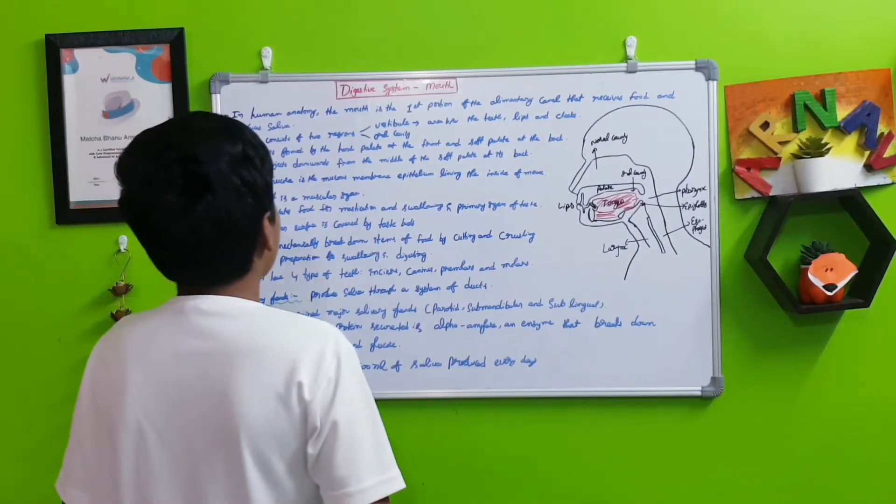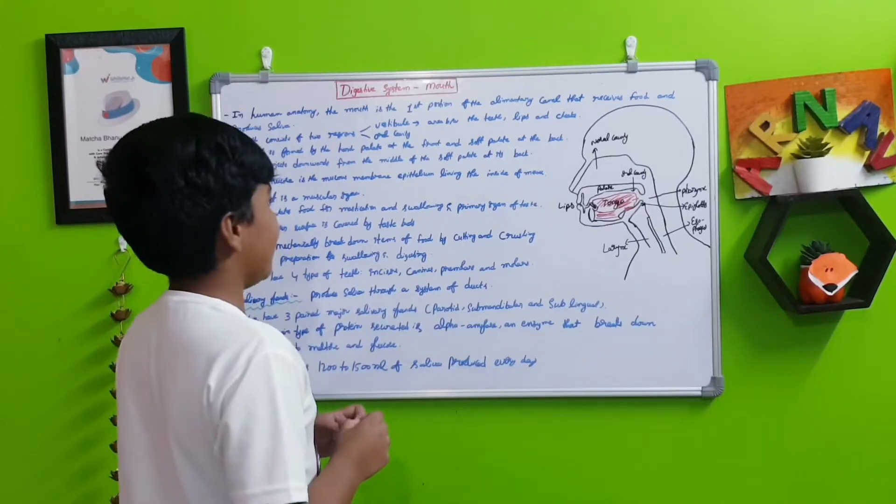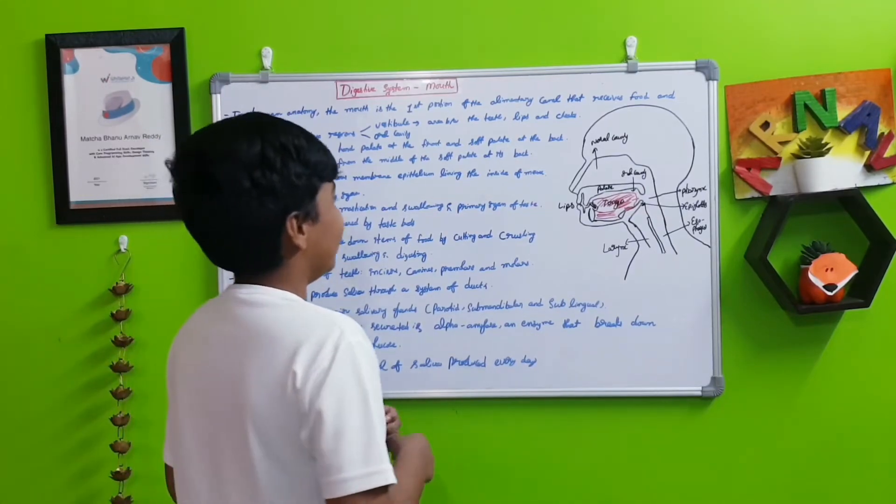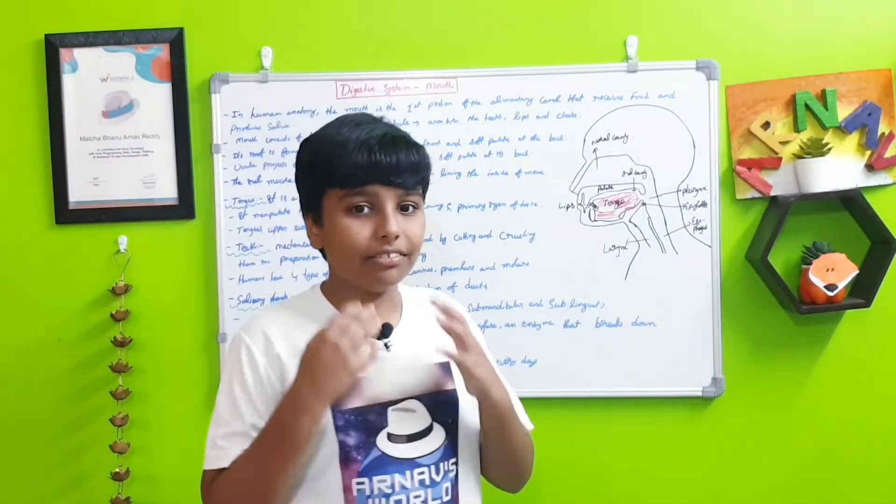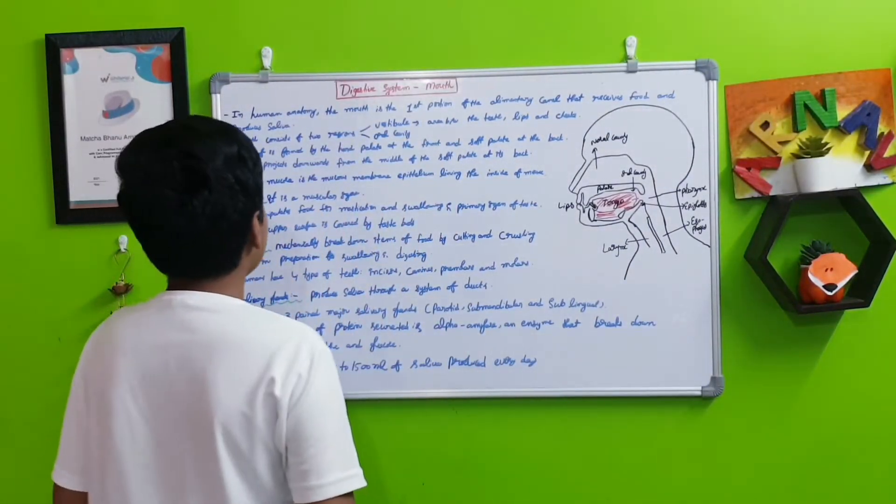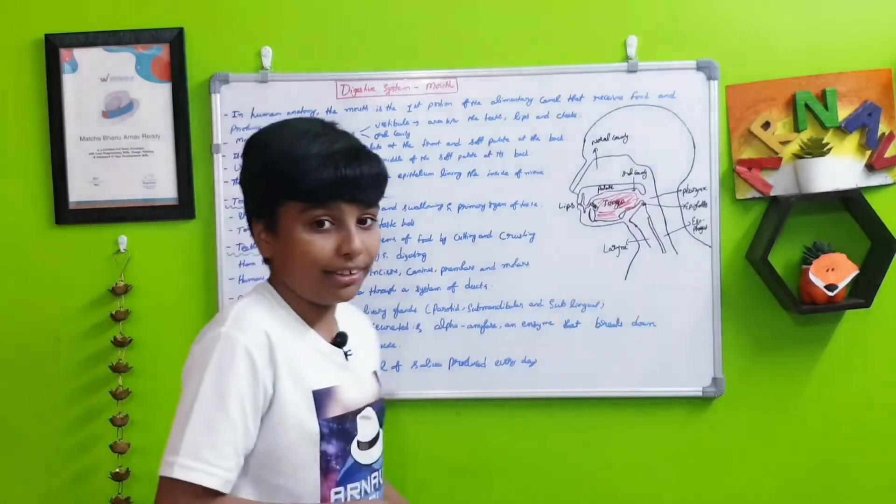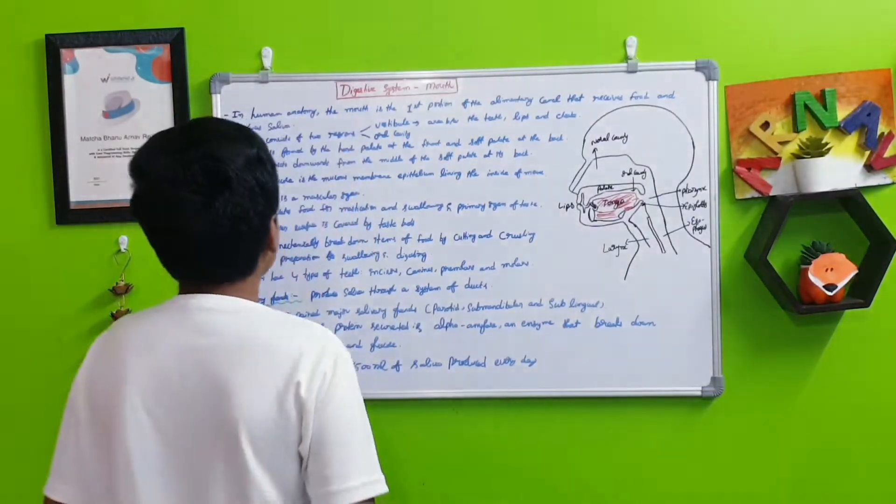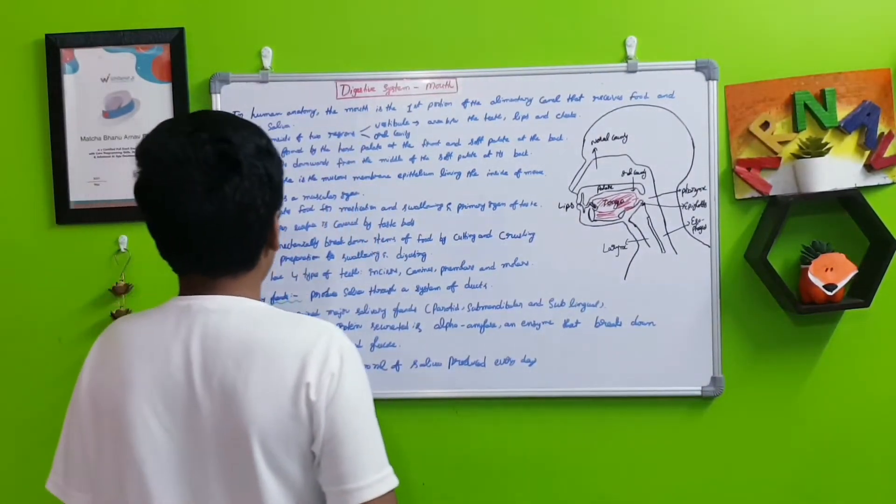The oral mucosa is the mucous membrane epithelium lining the inside of the mouth. Inside of the mouth every side there's a mucous lining. This is known as the oral mucosa.